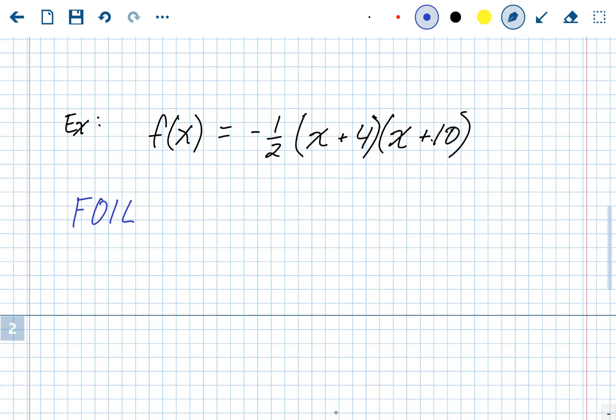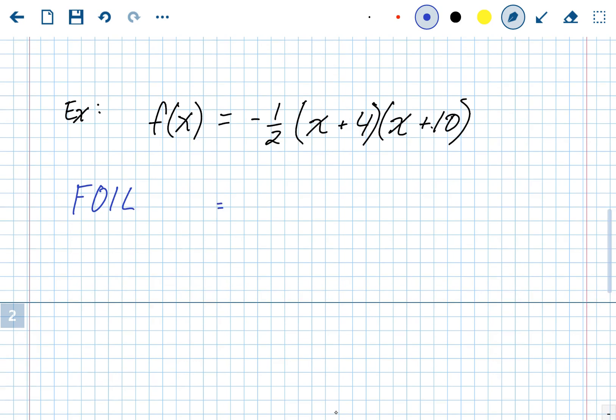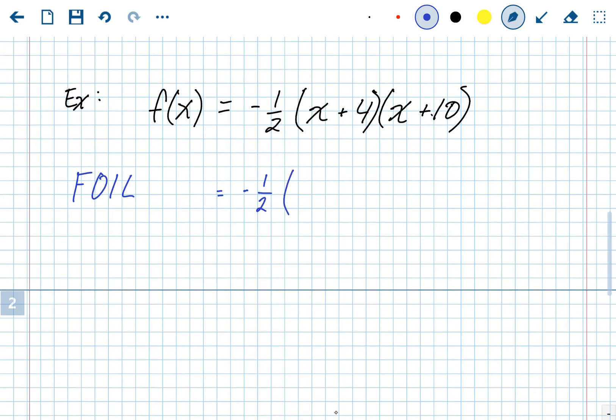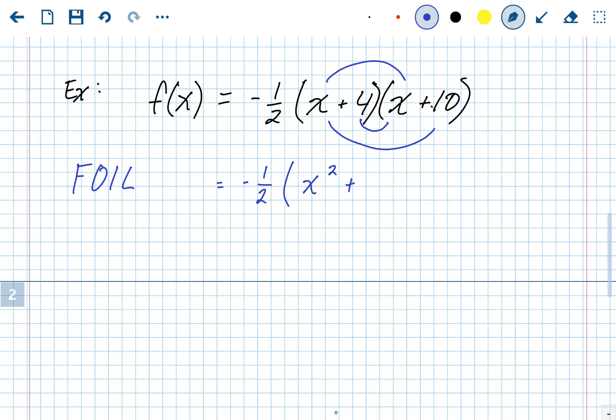So let's foil. The A value is negative 1 half. So again, the A value should stay negative 1 half in our final answer. Foil, first outside, inside, last. X squared. Outside, 10X. Inside, 4X. It's going to give me 14X. And then last, 4 times 10 is 40.